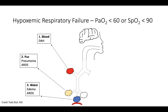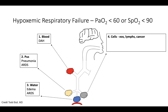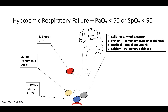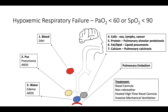Additional less common alveolar filling processes include cells — eosinophils, lymphocytes, or cancer — protein, a disease called pulmonary alveolar proteinosis, fat or lipid in a disease called lipoid pneumonia, and calcium, a rare entity called pulmonary calcinosis. Finally, pulmonary embolism also results in hypoxemia via VQ mismatch — in this case, there is ventilation but no perfusion. Hypoxemic respiratory failure is best treated with nasal cannula, non-rebreather, heated high-flow nasal cannula, or invasive mechanical ventilation.